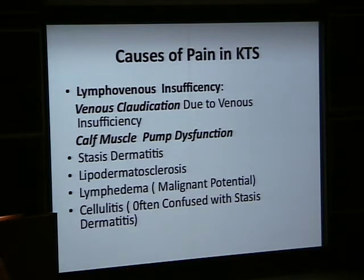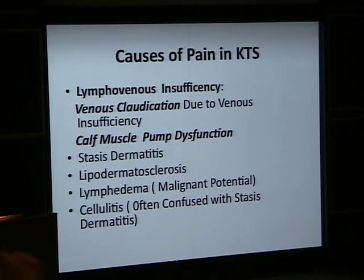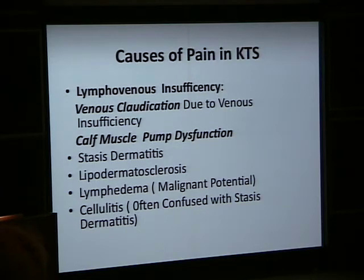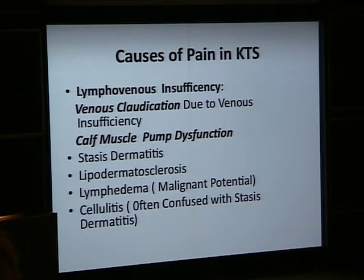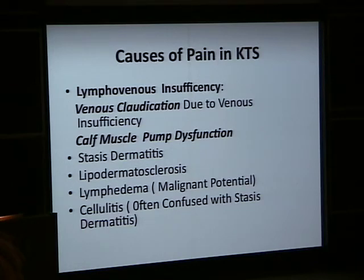Another element is venous claudication. Usually when we talk about claudication, we talk about arterial insufficiency — an older man with a history of smoking, hypertension, and diabetes who must stop walking to rest due to pain. In KTS, however, the claudication is venous, not arterial. Because of venous hypertension in the lower extremities and retention of fluid in the leg, these patients have chronic pain due to venous insufficiency.